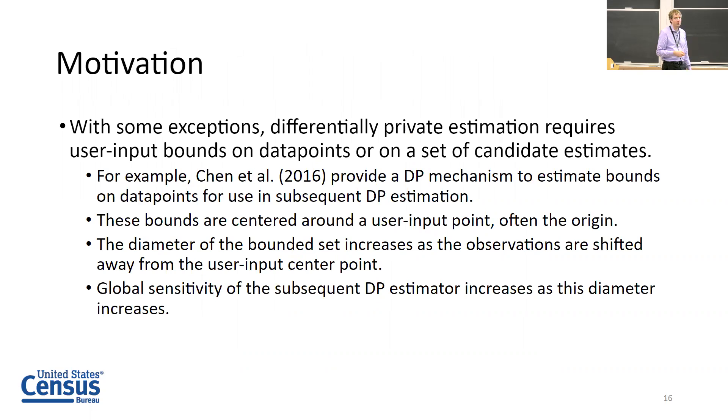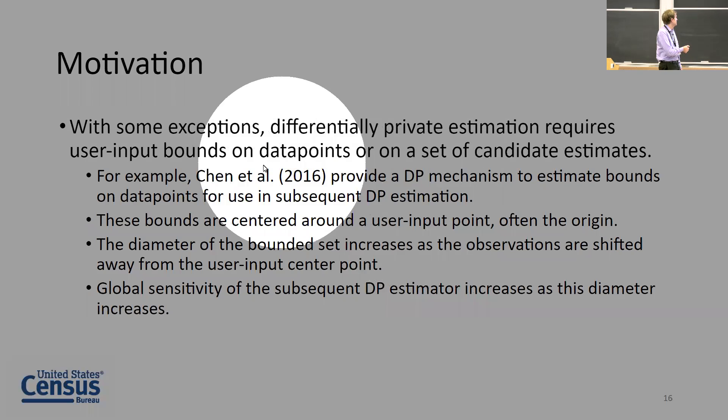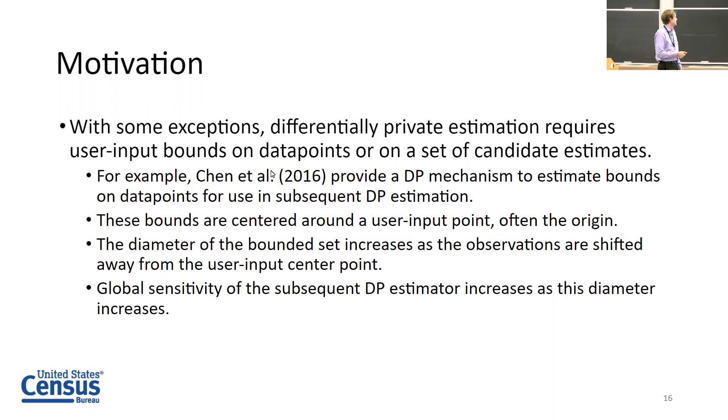This was my starting point for the paper - something tangential to all I've said so far. My starting point was really more about user input bounds. We talked about this in our discussion earlier. This is a particularly strong user input requirement in the case of regression, partly because you have multiple dimensions. If you don't do exploratory data analysis beforehand, it's really difficult to get an idea of what these bounds should be. You can do this in a differentially private manner to estimate these input bounds, which is what Chen et al. 2016 do.